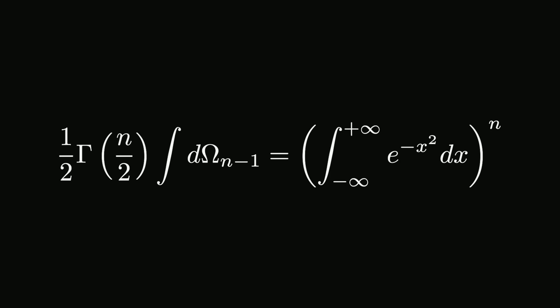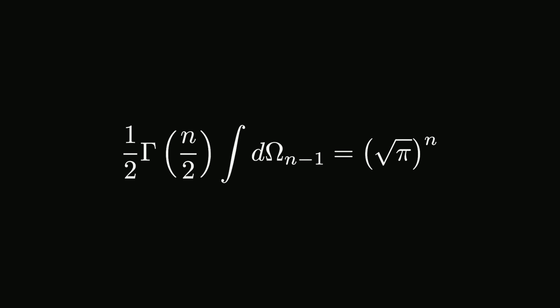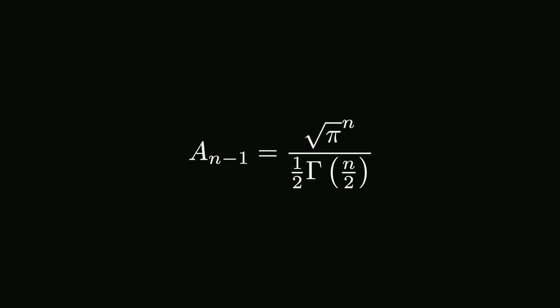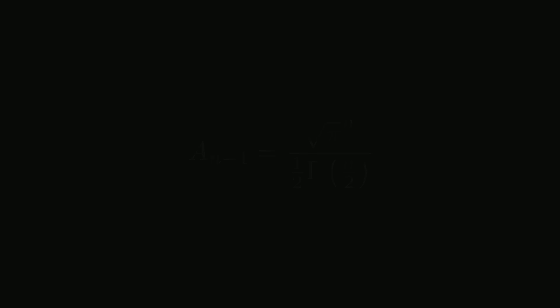Now, back to the hypersphere. We are ready to continue finding the surface area of an n-sphere. Since we know that the integral computes to one-half the gamma function with input n over 2 multiplied by the surface area of an n-sphere, and also that it equals the square root of pi to the power of n, we can set both sides equal to each other to find the general formula for the surface area. The surface area formula equals the square root of pi to the power of n divided by one-half the gamma function with input n over 2.